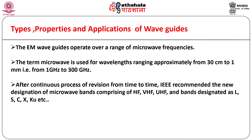After continuous revision, the Institute of Electrical and Electronics Engineers, abbreviated as IEEE, recommended a new designation of microwave bands comprising HF (high frequency), VHF (very high frequency), UHF (ultra high frequency), and bands designated as L, S, C, X, KU, etc. Besides this, military microwave bands are designated as A, B, C, D, E, F, G, or as P band, L band, S band, etc., all documented in literature.